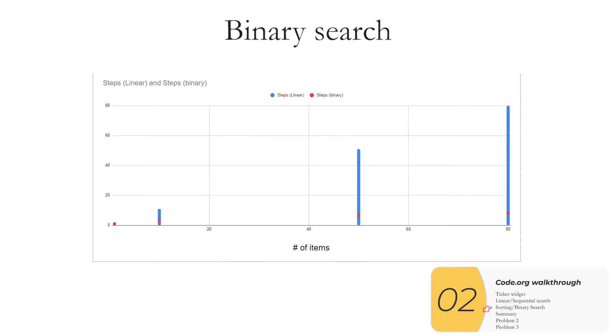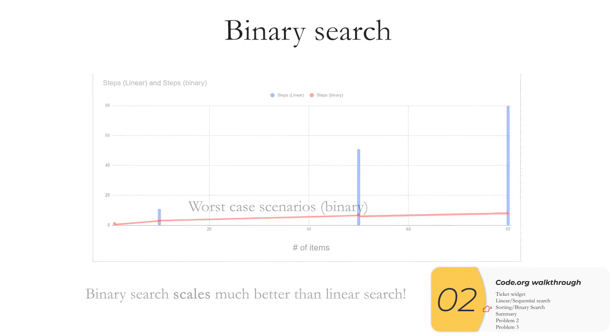Here I'm showing linear versus binary in picture form. The blue right here that's the linear number of steps. You see that sometimes it'll be very very fast but sometimes it'll be really slow. The red these are the worst case scenarios for binary and what you see is yes sometimes linear will be faster but most of the time binary is going to be faster especially as you search through many many items. Again we call this scaling. Binary search scales better than linear search.